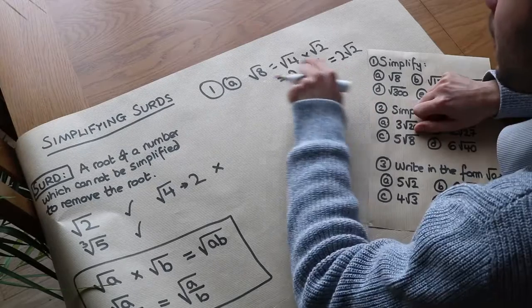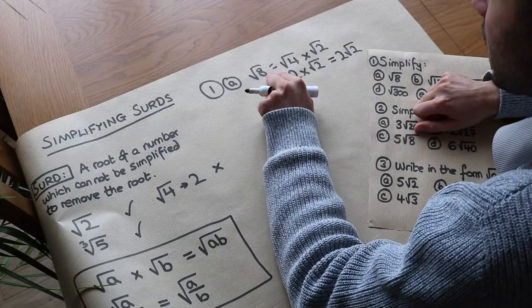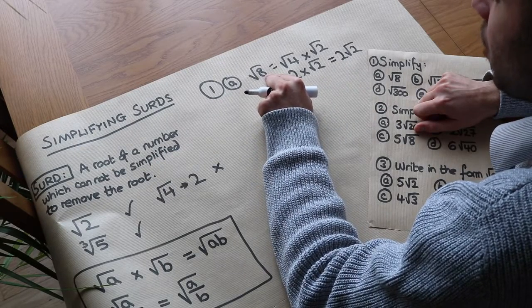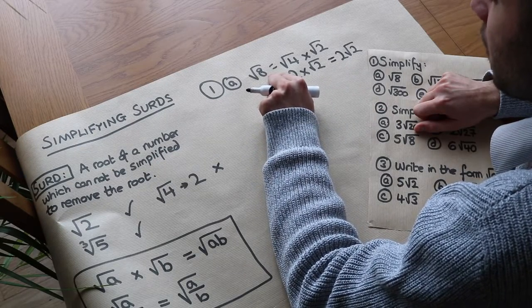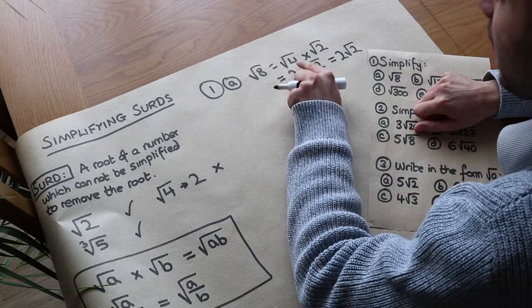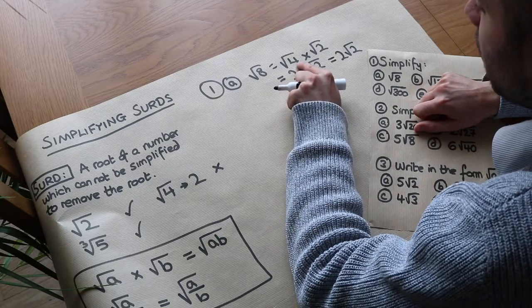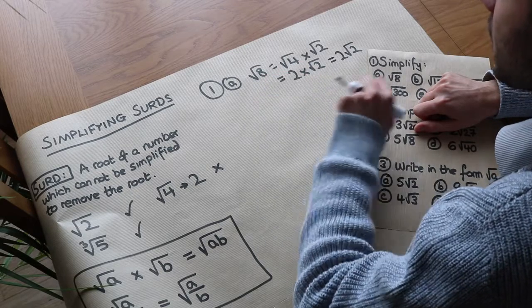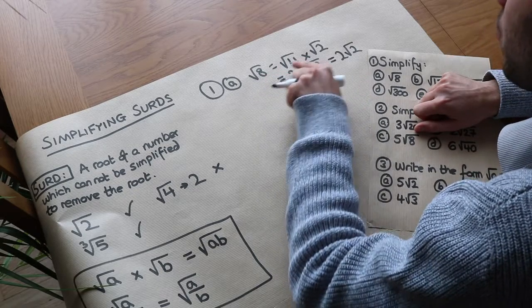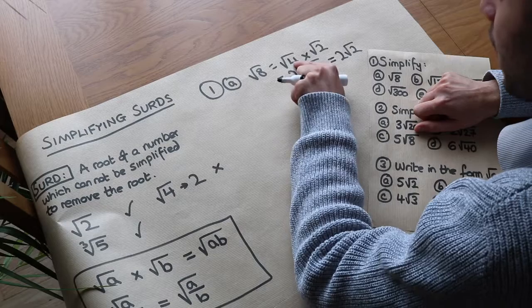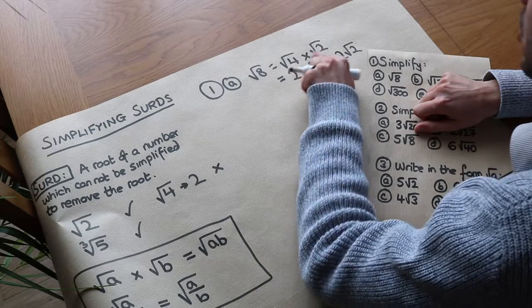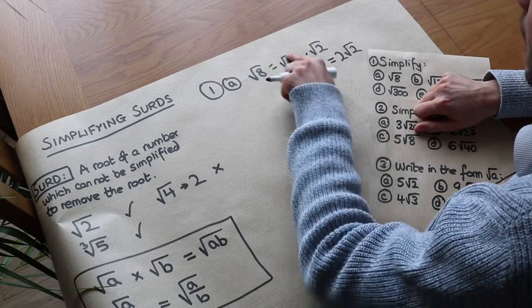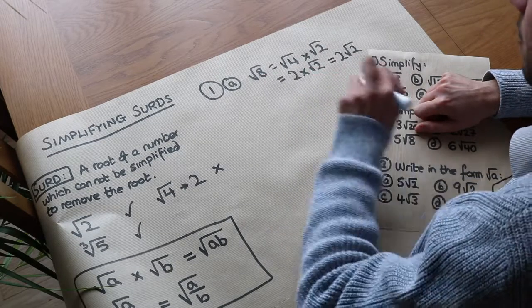The key is finding a square factor of that number. In this case, 4 is the largest square factor of 8, so we can write 8 as that square factor times the other number that makes up 8, and then it nicely simplifies. Identify the largest square factor.